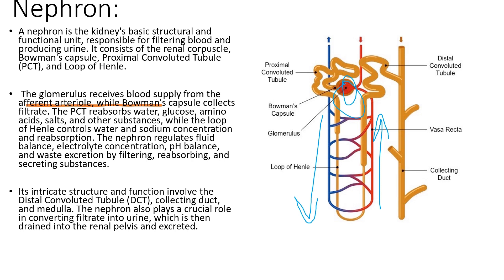The distal convoluted tubule comes after the loop of Henle. The distal convoluted tubule is responsible for further reabsorption and secretion processes. It regulates the concentration of ions such as sodium, potassium, and hydrogen ions, and helps to maintain the pH balance of the body.